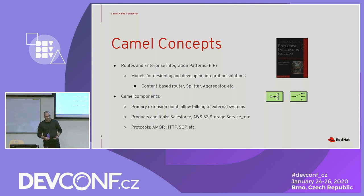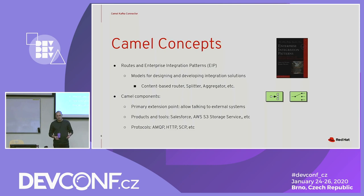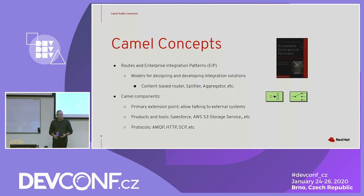Those enterprise integration patterns, such as the content-based router, splitter, and aggregator, can be used to solve problems such as: how do we move data from system A to system B or C based on the contents of the data being transported? Or how can I combine multiple pieces of data and send it as one to a REST API? To interconnect to these systems, Camel uses what it calls components. Components are the primary extension points that allow Camel to talk to external systems. Camel has more than 300 components supporting multiple products and protocols.